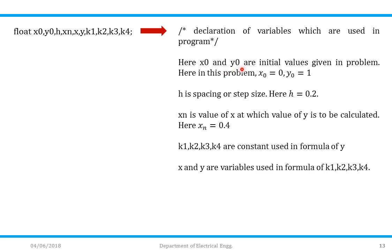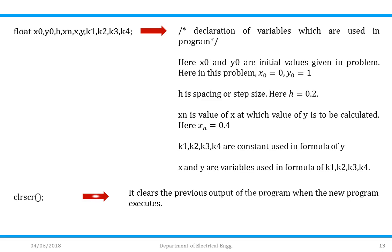Declare float variables: x0, y0, h, xn, x, y, k1, k2, k3, and k4. Here x0 and y0 are initial values — from the problem x0 = 0 and y0 = 1. h is the step size, from the problem h = 0.2. xn is the value of x at which y is to be calculated, so xn = 0.4. k1, k2, k3, k4 are the constants used in the RK formula. x and y are used in the k1–k4 formulas.